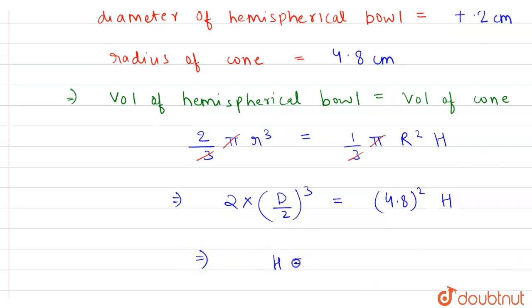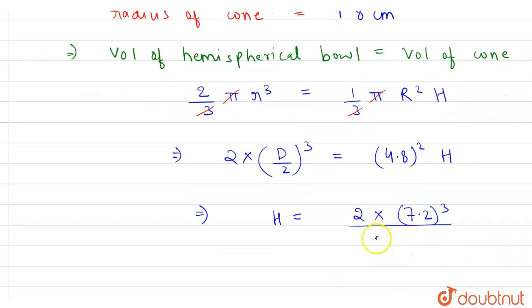So this will be h equal to 2 × 7.2³ upon 2³ × 4.8².